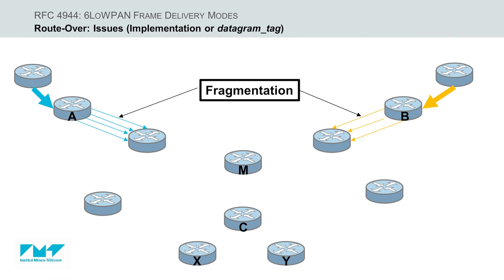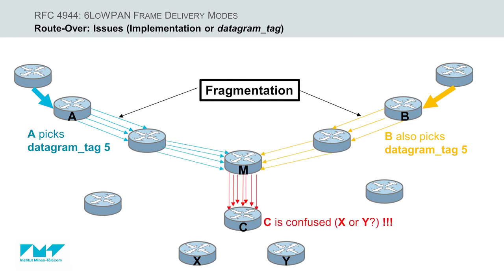For example, consider that two different traffic flows in a multi-hop network traversing through nodes A and B may be labeled with the same datagram tag value during a fragmentation operation. Then an issue arises when these two traffic flows traverse a common relay node, node C. In this case, node C is confused since it doesn't know to which next hop to forward the fragments.